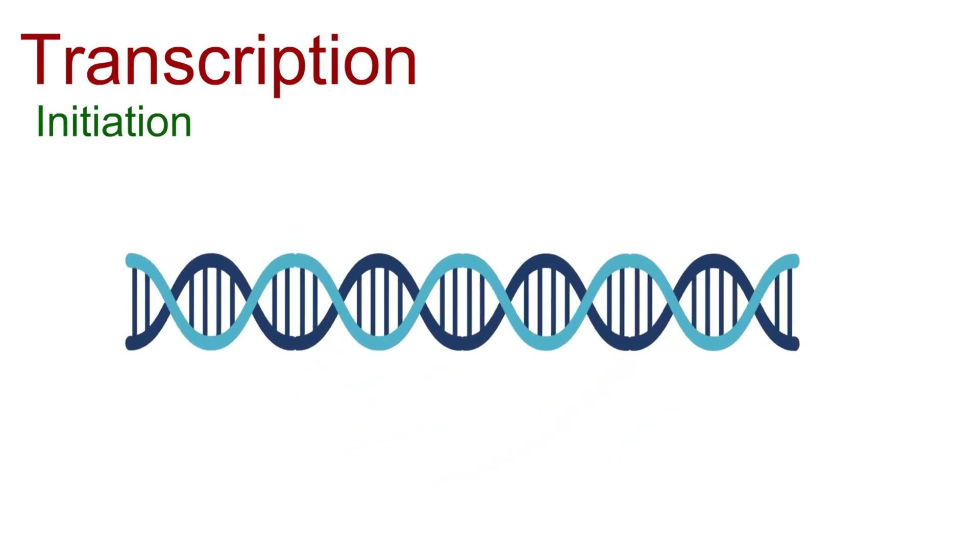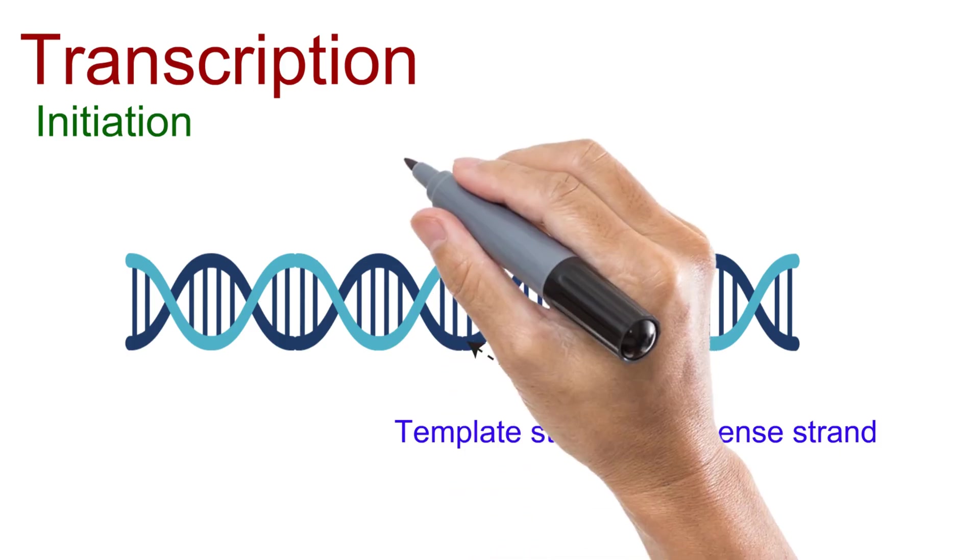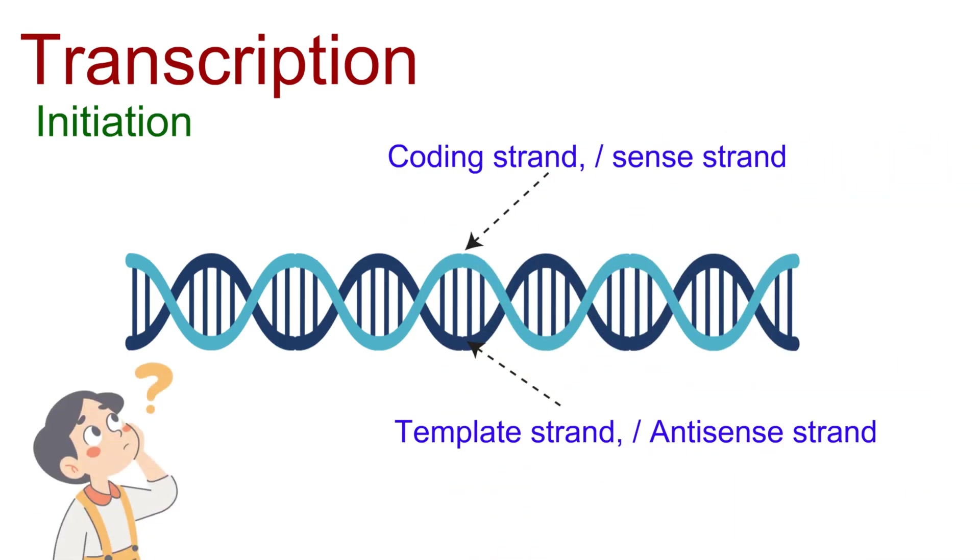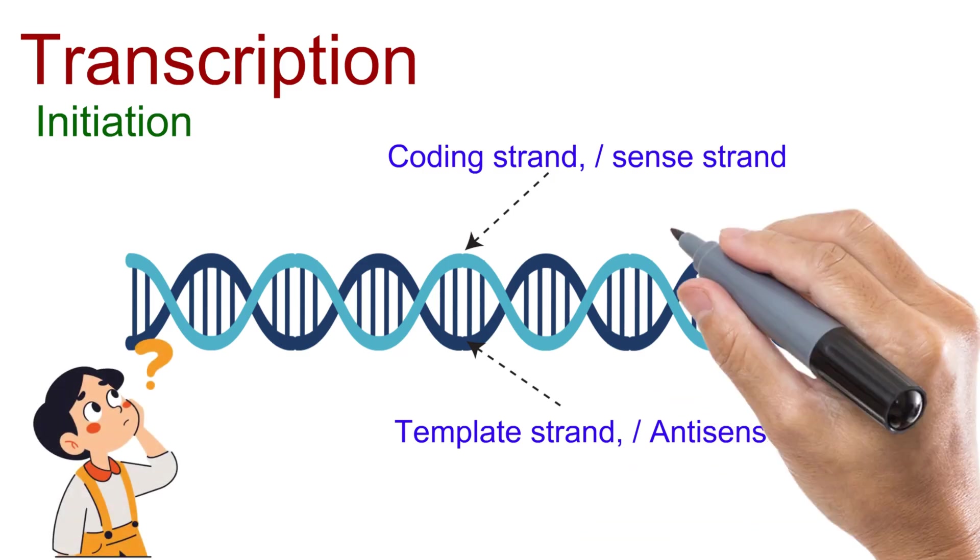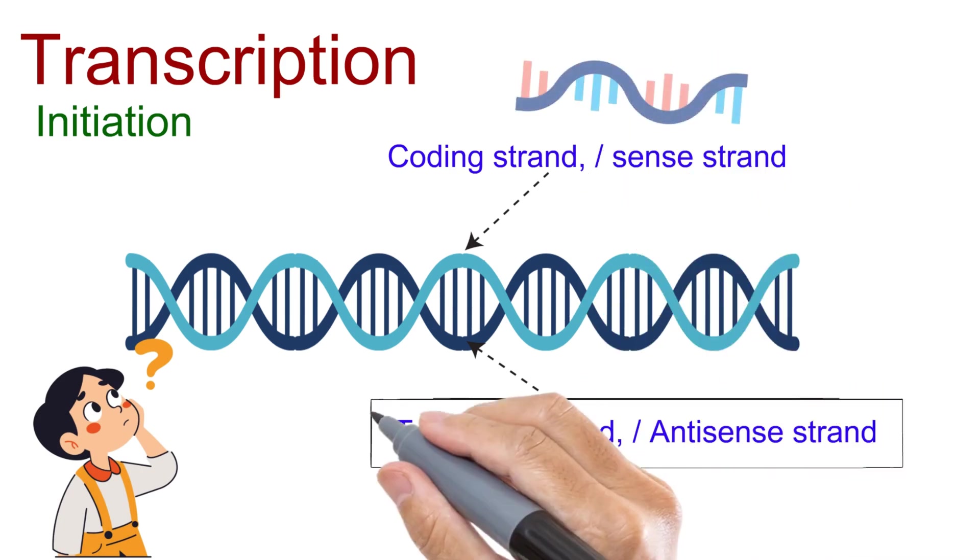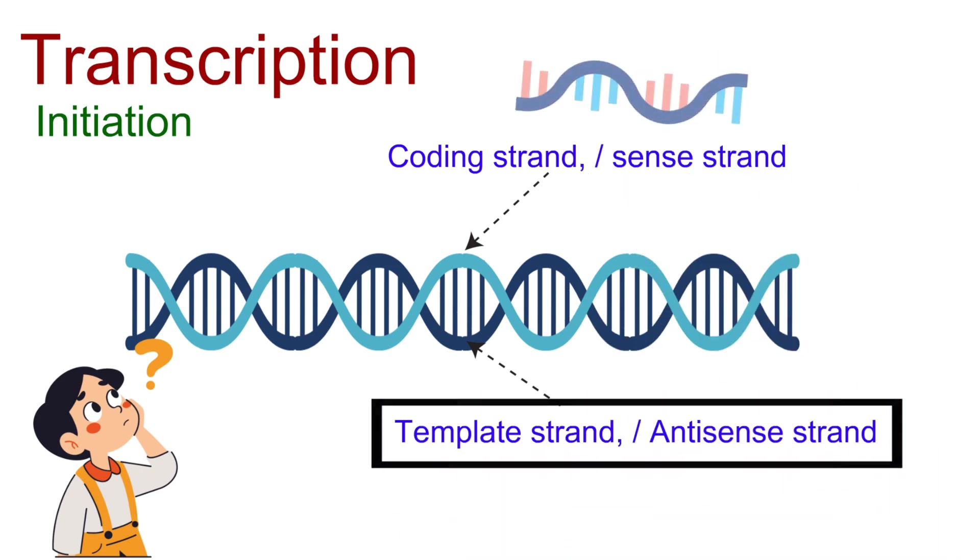Now remember, DNA is a double helix made of two strands, but only one strand is transcribed. This is called the template strand, or the antisense strand. The opposite one is the coding strand, or the sense strand. Here's a question for you: if the coding strand already looks like the RNA we want, then why does RNA polymerase copy the opposite strand instead? Think about it. I'll reveal the reason in a moment.